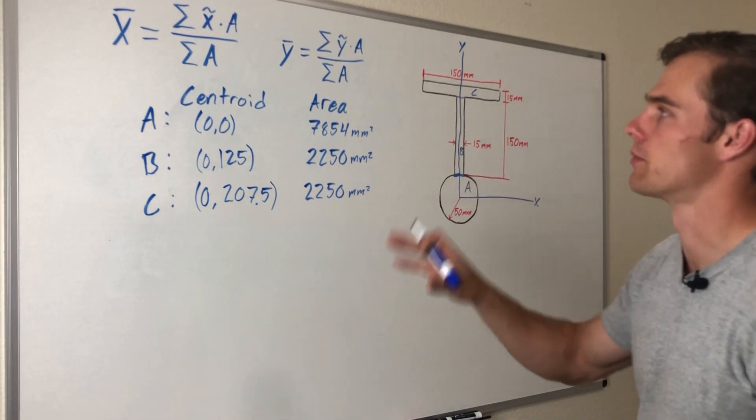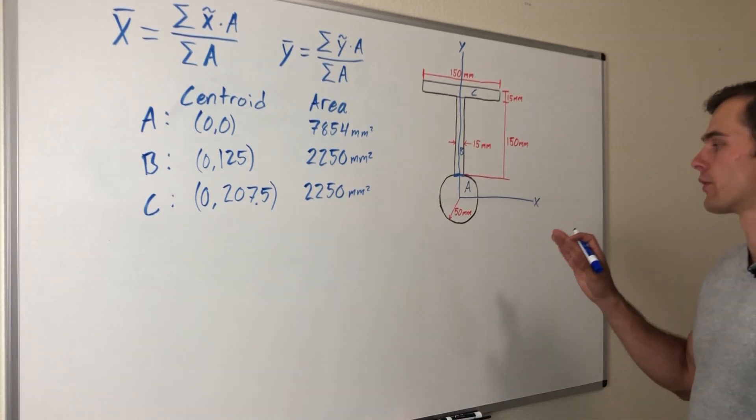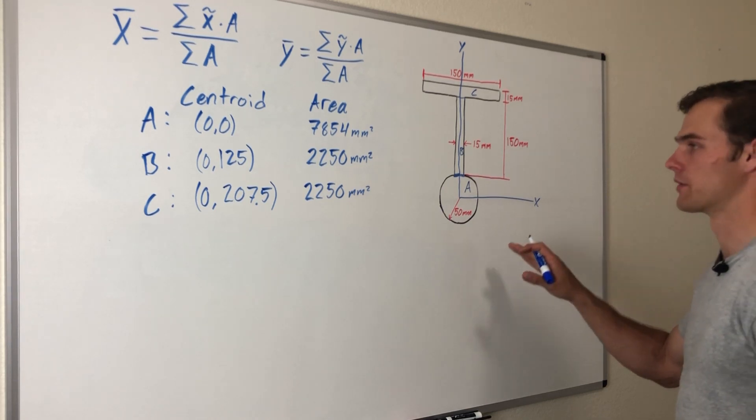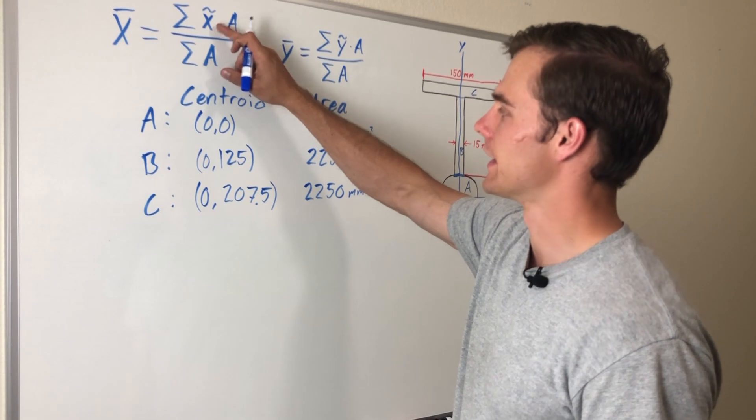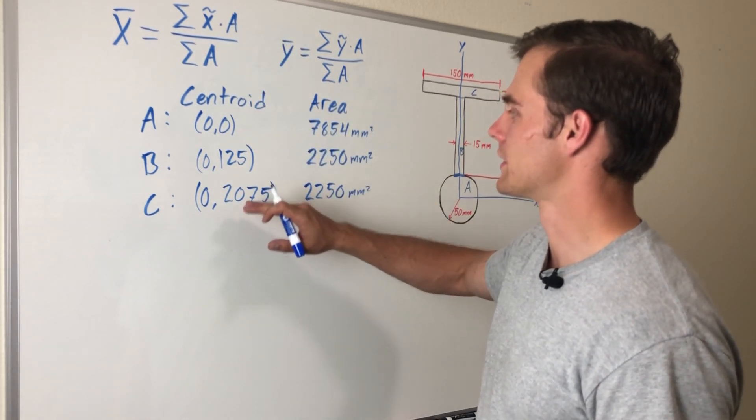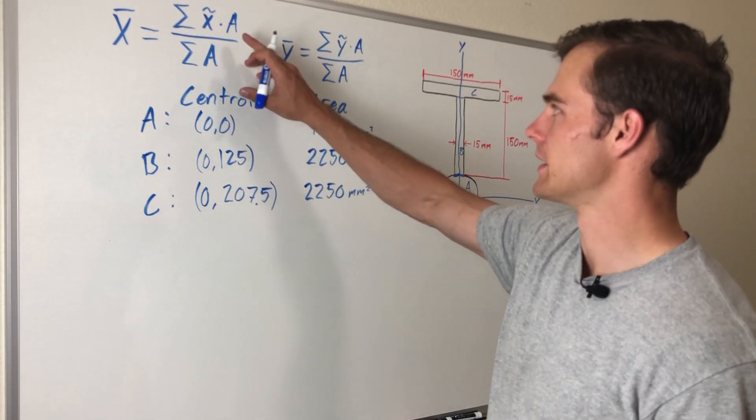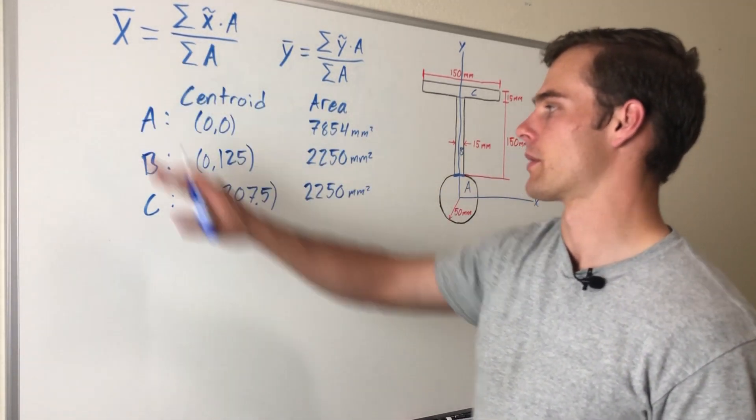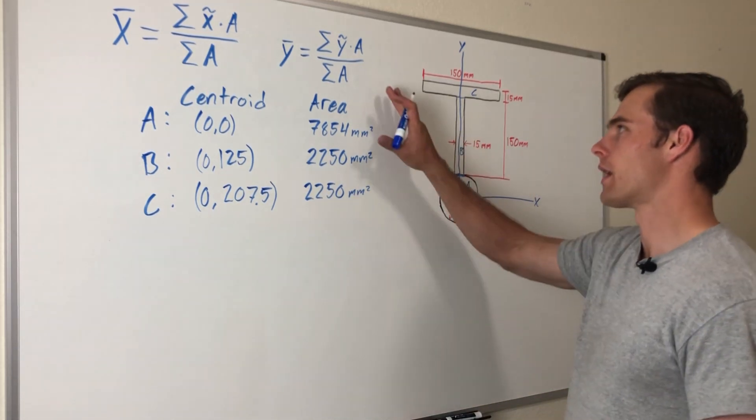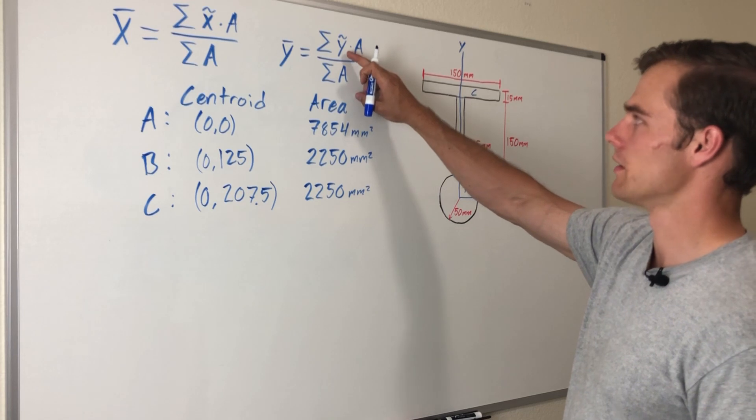Now we plug these into the equations. We already identified that x̄ is going to have the coordinate of zero. The reason is because the x̃ of all these centroids, the x coordinate of the center of mass of all these, is zero. That means this top part is going to be zero, making x̄ zero. But ȳ on the other hand is not going to be zero because not all of the ỹ's are zero.